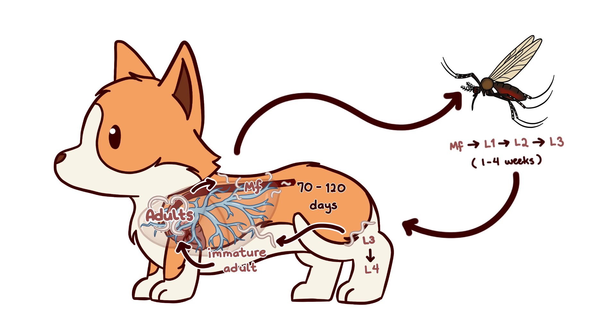Adult heartworms have a lifespan of around 3 to 5 years, which makes sense because most heartworm infections are diagnosed in dogs between ages 3 to 8.